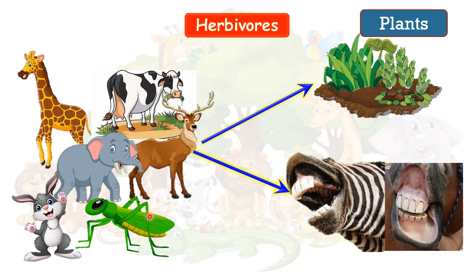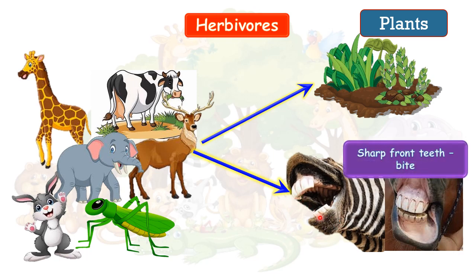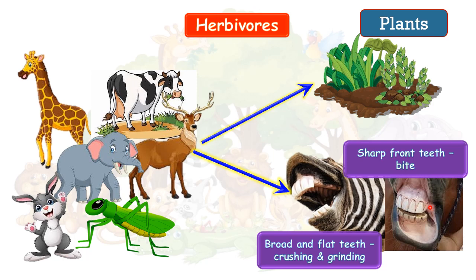Now let's see their teeth structure. Herbivores animals have sharp front teeth. Why do they have sharp front teeth? Because it is easy to cut plants. And they have broad flat teeth on the back side to grind these plants for eating. So sharp front teeth for cutting plants and broad back teeth for grinding plants. This is all about herbivores animals.